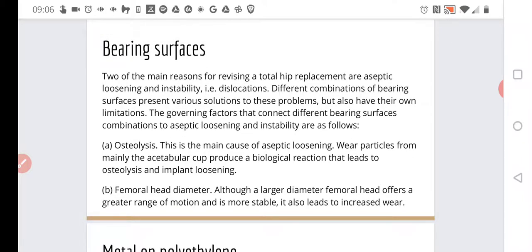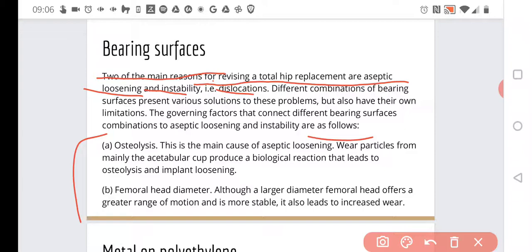And generally, what can happen? Two of the main reasons for revising total hip replacement are aseptic loosening and instability, so dislocations. Different combinations of bearing surfaces present various solutions to these problems, but also have their own limitations. The governing factors that connect different bearing surfaces combinations to aseptic loosening and instability are these two ways to think about it.